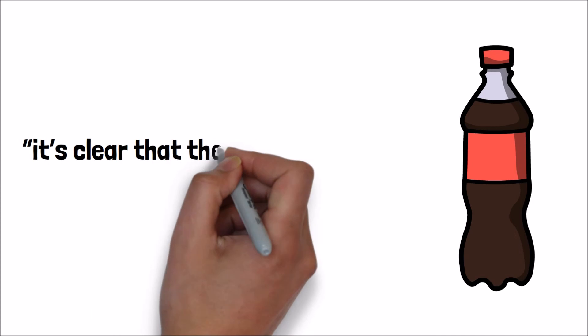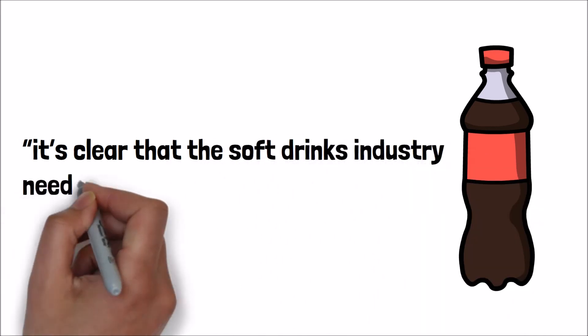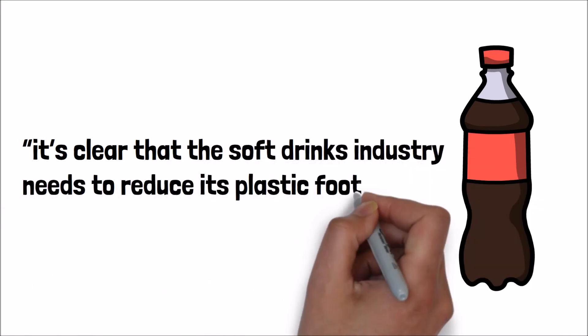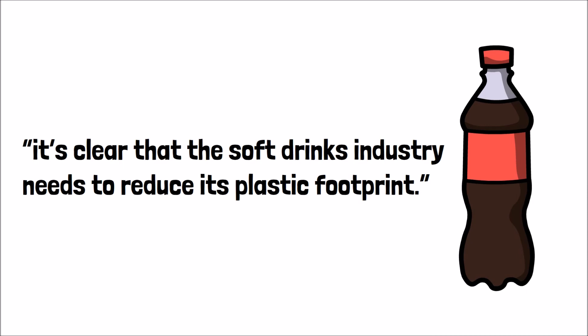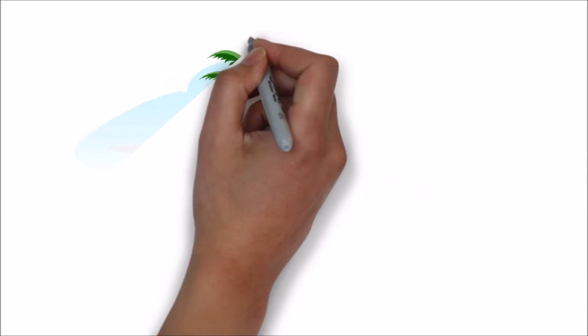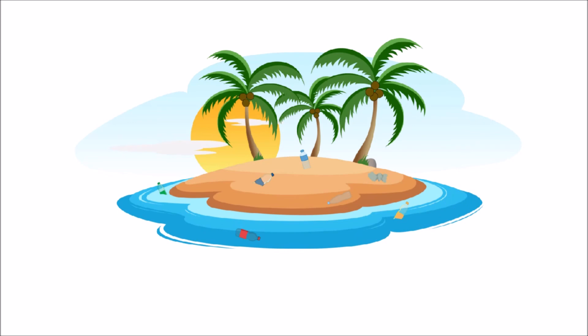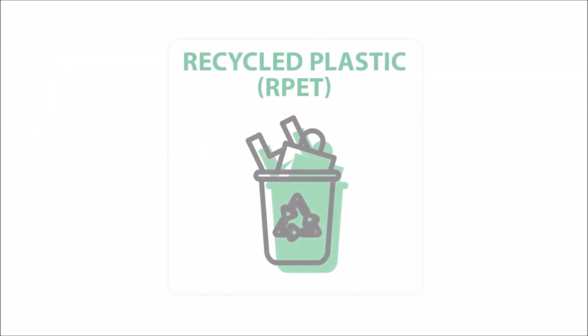It's clear that the soft drinks industry needs to reduce its plastic footprint. Many soft drink companies are using recycled bottles to help make new ones. However, for all new plastic bottles to be made 100% of recycled plastic, more factories need to produce high-quality, recycled, food-grade plastic.